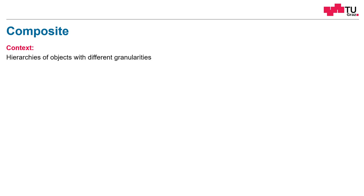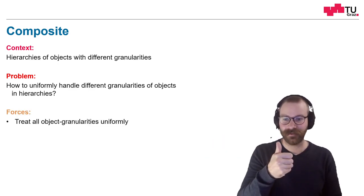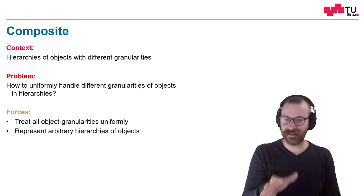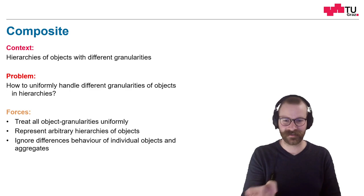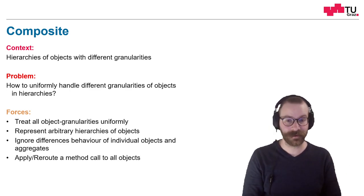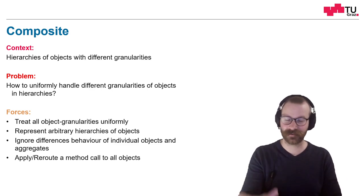Let's talk about individual attributes now. What is the context? We have object hierarchies with different granularities. And the problem here is we want to treat them uniformly. We don't want to make a difference between single objects and multiple objects, and maybe also different hierarchies of objects. What are the forces here? First of all, we want to treat all object granularities uniformly. Then we want to represent arbitrary object hierarchies — whether it's a list, a tree, or any kind of object hierarchy. We want to ignore the differences between individual objects and aggregates. We don't want to create special methods for individual versus multiple objects. And we also want method calls to be rerouted to all objects which belong to this hierarchy.